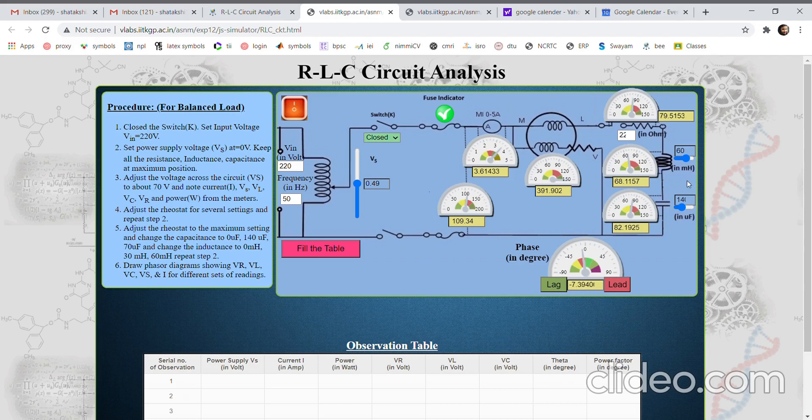And if my inductor dominates like in this case, now my current is lagging, so it is 9.23 degree lag. So in this way we can vary the value of resistances, inductance, and capacitance to see the behavior of different parameters.